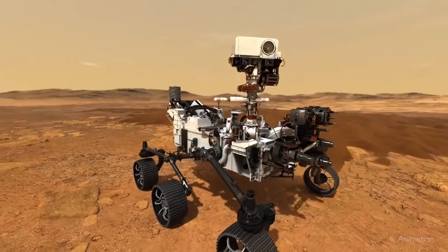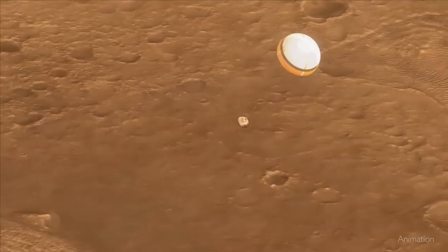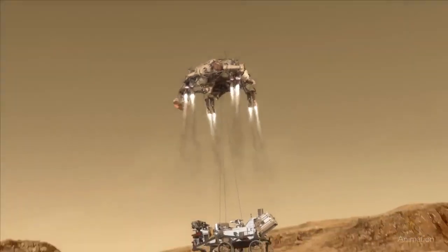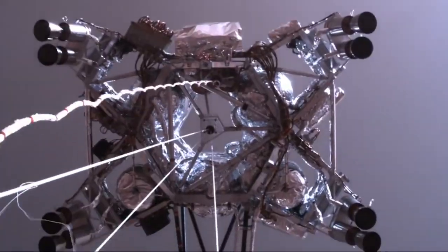NASA's most recent Mars rover, Perseverance, slowed from nearly 13,000 miles an hour to a soft landing on the surface in about seven minutes. It involved a parachute, thrusters, and even a sky crane.